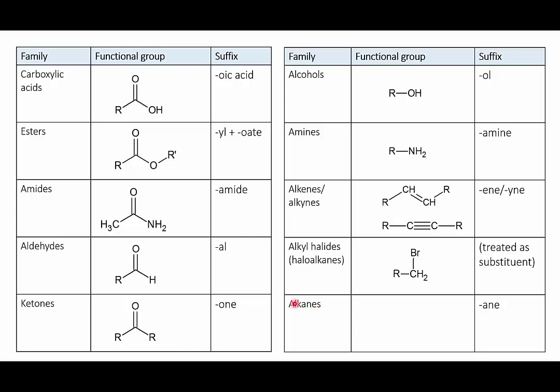Alkanes, alkenes and alkynes you already know. For instance you use the '-en' suffix to indicate that there is a double bond in the molecule, and you use the '-yne' suffix to indicate that there's a triple bond. Haloalkanes don't actually have a suffix. They're always treated as a substituent, so they get added as a prefix to the front of the name, a bit like hydrocarbon substituents like methyl and ethyl. We'll look at examples in a later video.